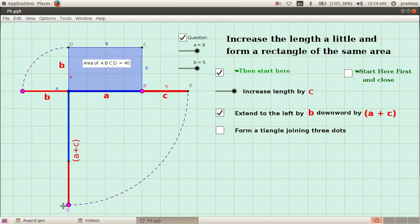These arcs show that this is of the same length of this breadth, and this is of the same length of distance a plus c.